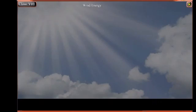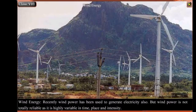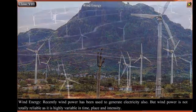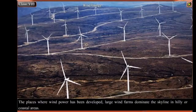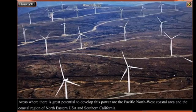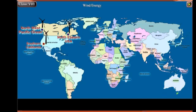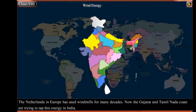Wind Energy: Recently, wind power has been used to generate electricity. However, wind power is not totally reliable as it is highly variable in time, place, and intensity. Where wind power has been developed, large wind farms dominate the skyline in hilly or coastal areas. Areas with great potential include the Pacific Northwest coastal area, the northeastern USA coast, and Southern California. The Netherlands in Europe has used windmills for many decades. The Gujarat and Tamil Nadu coasts are trying to tap this energy in India.